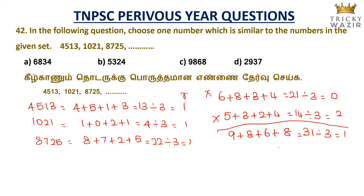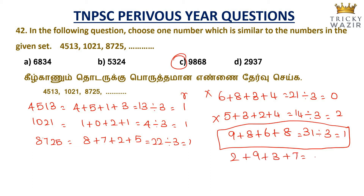So the number 9868 matches the pattern with remainder 1. Also checking 2937: 2 plus 9 plus 3 plus 7 equals 21; 21 divided by 3 gives remainder 0. The matching number following the pattern is 9868.